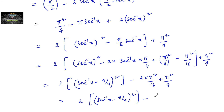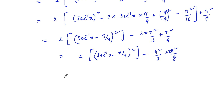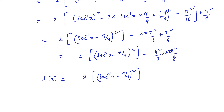Adding back π²/4, we get 2·(sec⁻¹x - π/4)² - π²/8 + π²/4, which simplifies to 2·(sec⁻¹x - π/4)² + π²/8. Since (sec⁻¹x - π/4)² is always non-negative and π²/8 is always positive, the minimum value is π²/8. To find the maximum value, we look at the extreme values of sec⁻¹x.